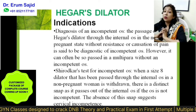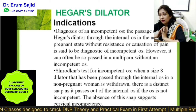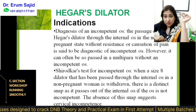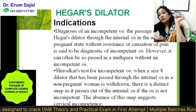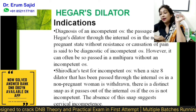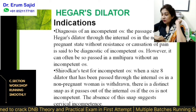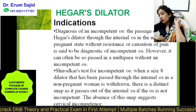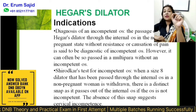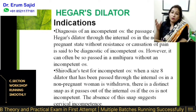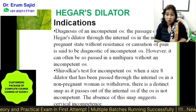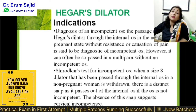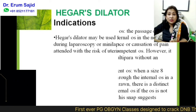Now, the diagnosis of incompetent os — listen closely. The passage of a size 8 Higar's dilator through the internal os, not the external os, in the non-pregnant state without resistance or pain will lead to the diagnosis of incompetent os. Shirodkar's test for incompetent os: when a size 8 dilator passed through the internal os in a non-pregnant woman is withdrawn, there is a distinct snap as it passes out of the internal os if the os is not incompetent. The absence of the snap suggests cervical incompetence. This is an old test from before ultrasound was readily available.